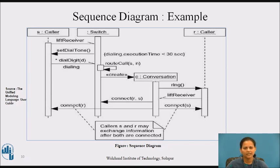Objects may be created during the interaction. Their lifelines start with the receipt of the message stereotyped as create. Objects may be destroyed during the interaction.